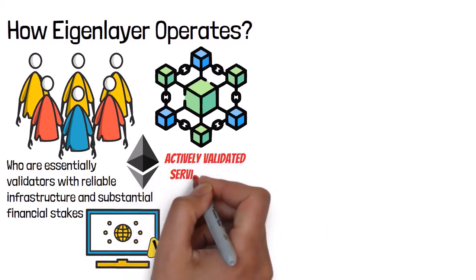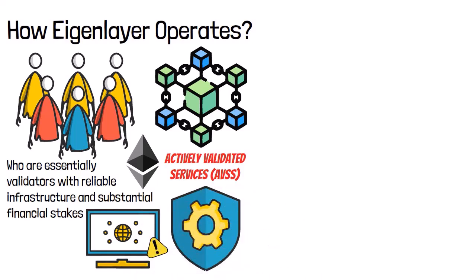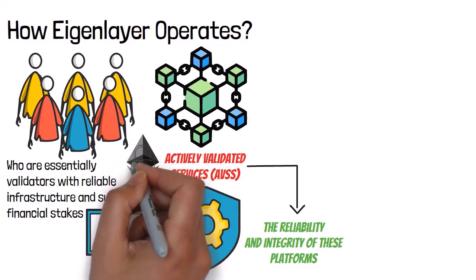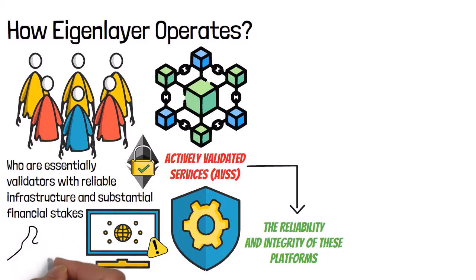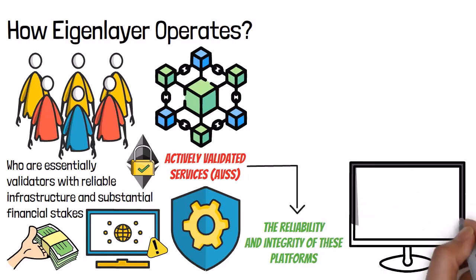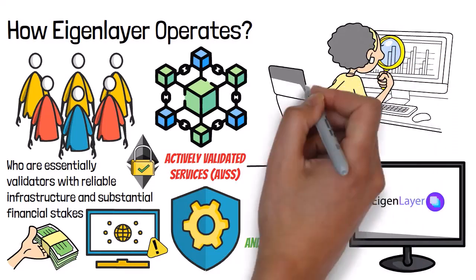Central to EigenLayer's operation are Actively Validated Services (AVSs) — various blockchain services and networks that validators can choose to secure. When operators allocate their resources to these AVSs, they provide essential security and validation services, ensuring the reliability and integrity of these platforms. Income for validators comes from fees paid by the AVSs, compensating them for their security services and creating an incentive to participate. By staking their assets and validating multiple services, validators earn rewards, making EigenLayer a potentially lucrative platform.